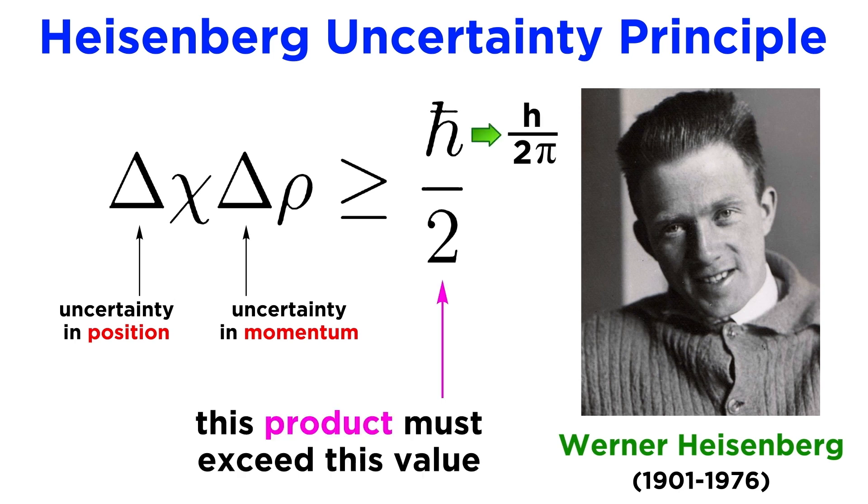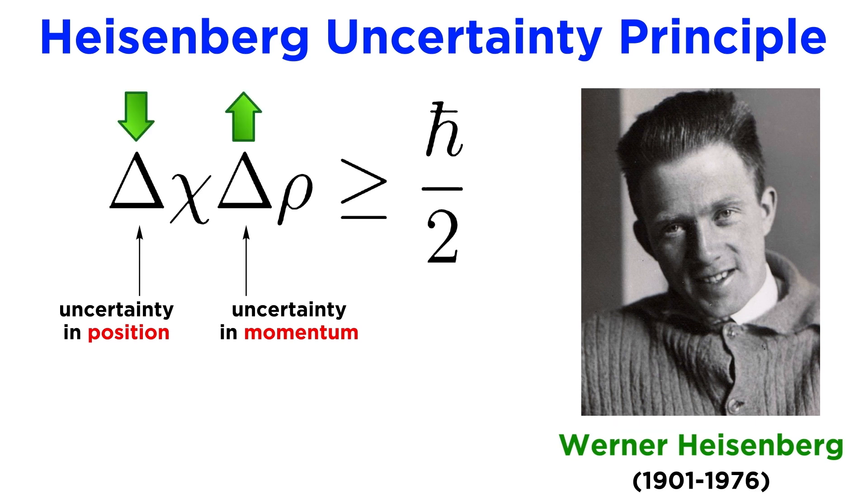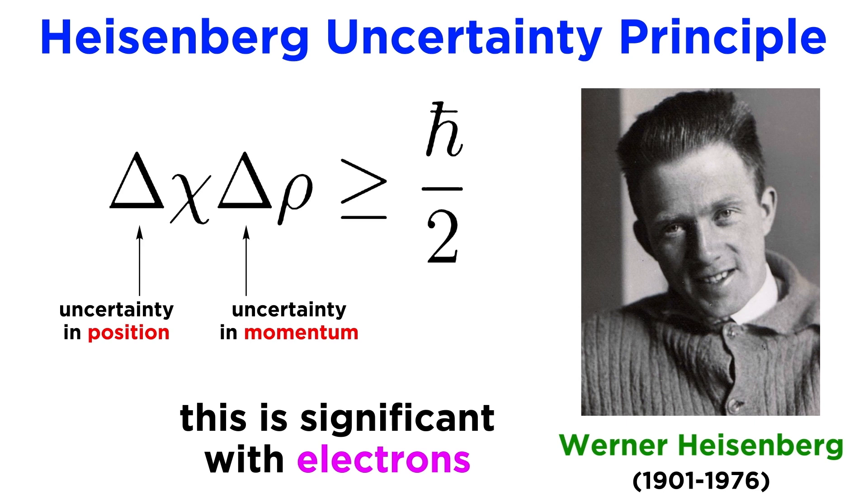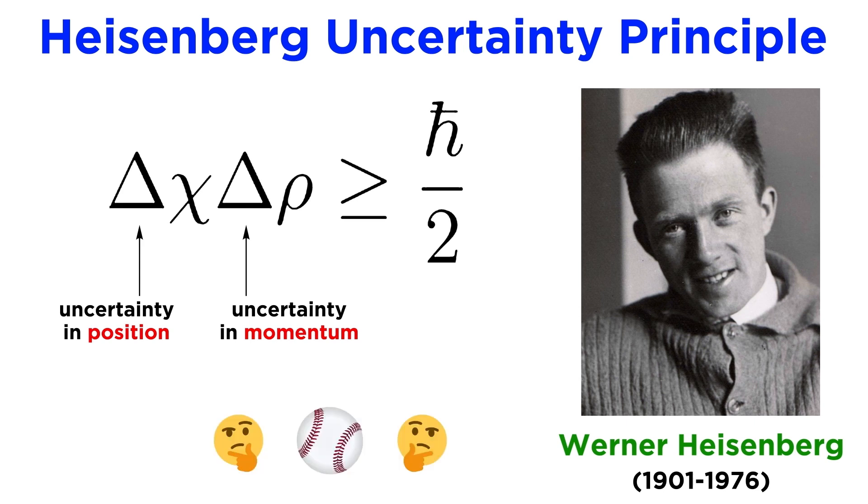What this really means is that a reduction in the uncertainty in one parameter must result in an increase in the uncertainty of the other, such that if we know one variable with certainty, the other will be completely unknowable. Again, this theoretically applies to any matter, but it is only significant in tiny particles like electrons, which is why when we measure the speed of a fastball, it doesn't suddenly disappear, and when we locate a stationary object, it doesn't suddenly fly away.